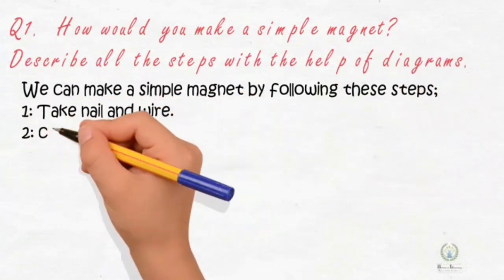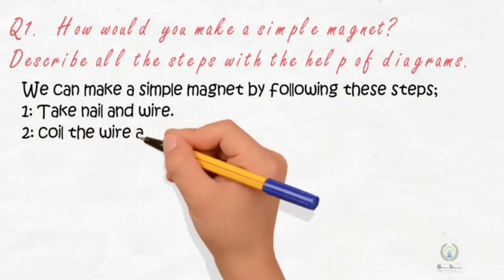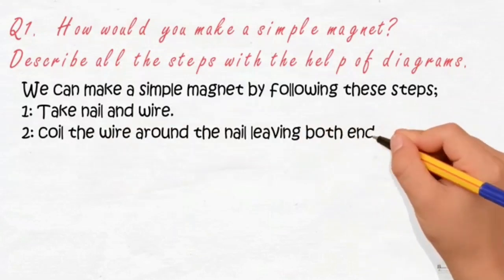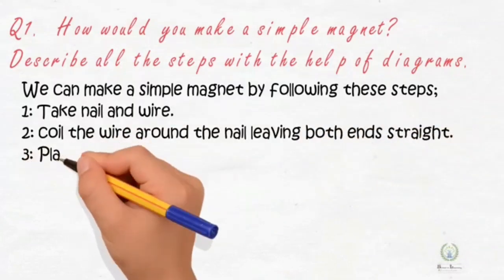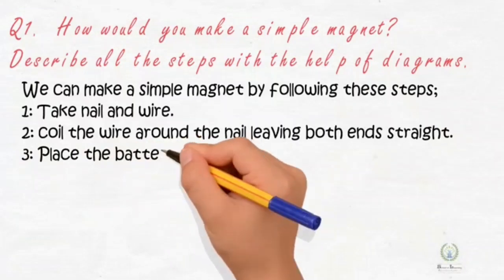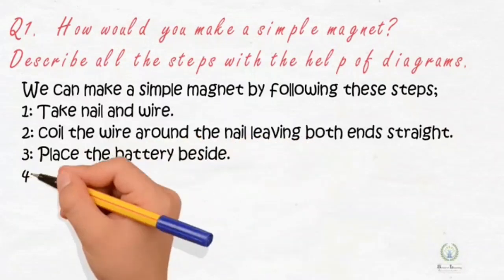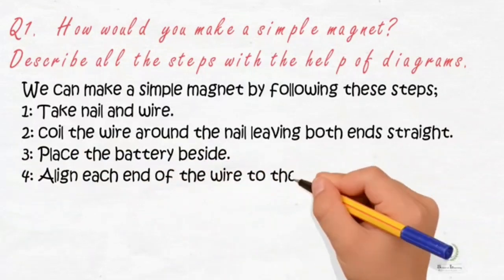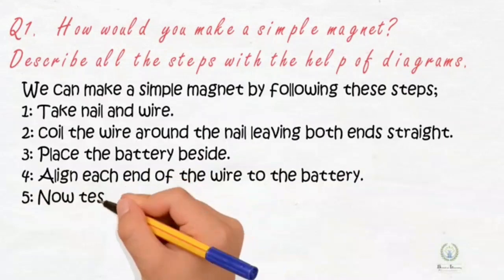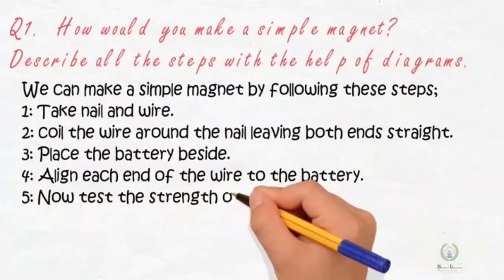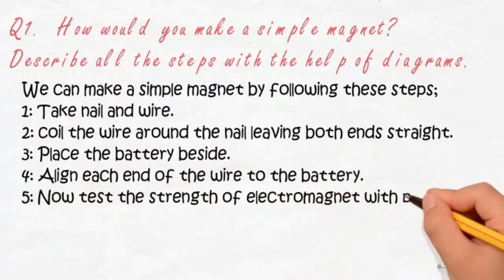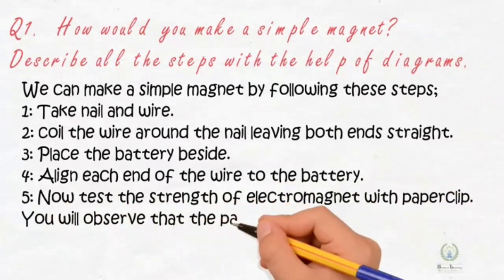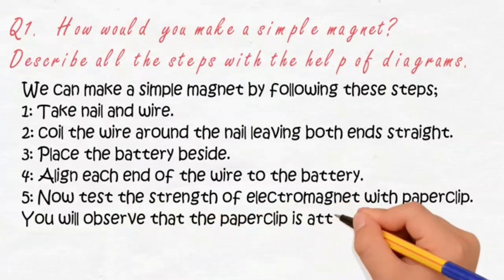We can write the answer: we can make a simple magnet by following these steps. Number one: take a nail and wire. Number two: coil the wire around the nail leaving both ends straight. Number three: place the battery beside. Number four: align each end of the wire to the battery. Number five: now test the strength of electromagnet with the paper clip. You will observe that the paper clip is attracted to the coiled nail.